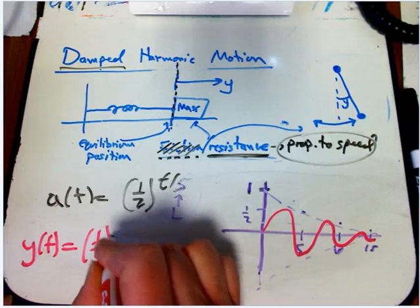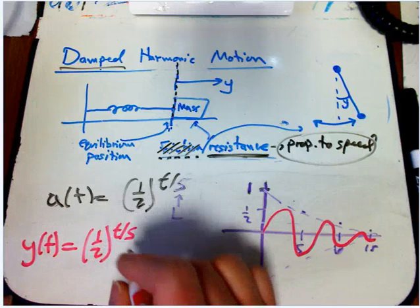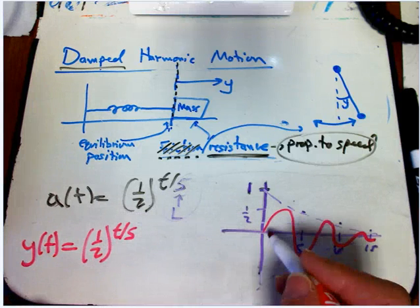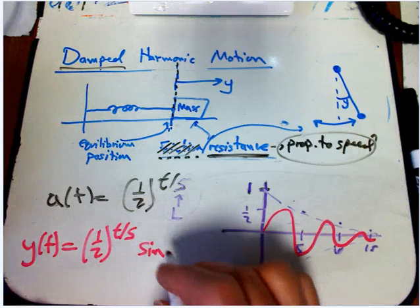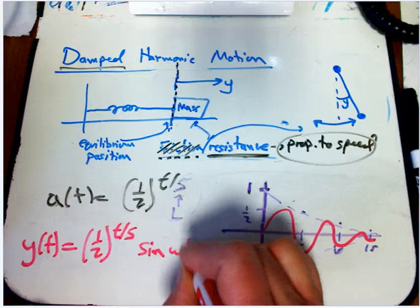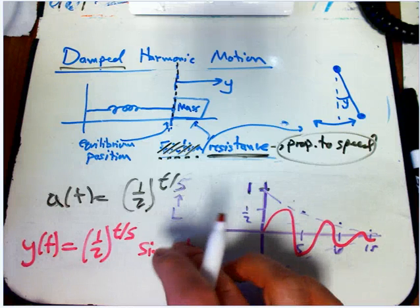If that's a of t, then what's y of t going to be? We're going to take that a of t, and then we're going to multiply it by a sine or cosine. Like here, that would be a sine wave.